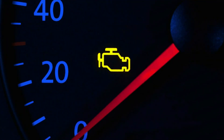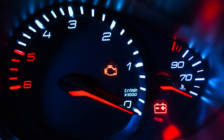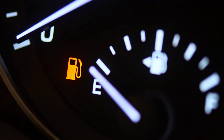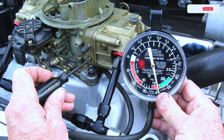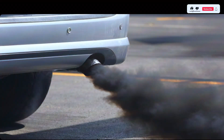Symptoms of the P0012 code include: the check engine light illuminated, affected engine performance at high RPMs, reduced fuel economy and overall engine performance, affected engine idle quality, and failing an emissions inspection.